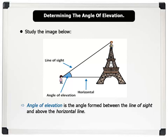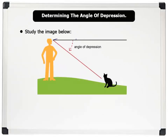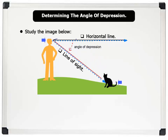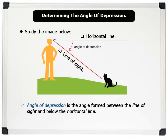Let us also discuss the angle of depression. Looking at the image on the board, the man looks in a horizontal direction into the distance. But when he wants to look at his cat sitting on the grass, he lowers his line of sight. The angle formed while lowering his eyesight is called the angle of depression. Therefore, the angle of depression is the angle formed between the line of sight and below the horizontal line. That's very good.